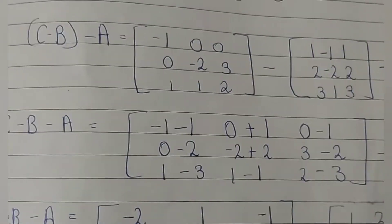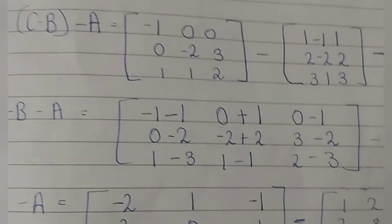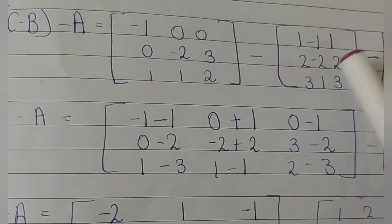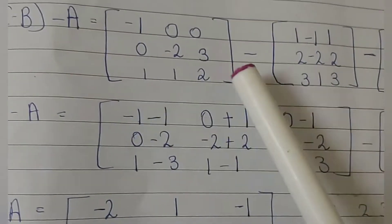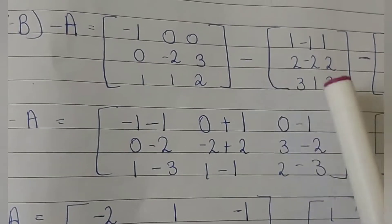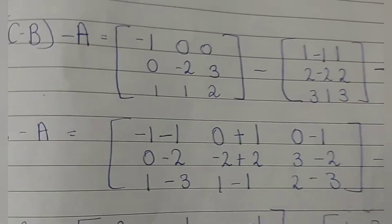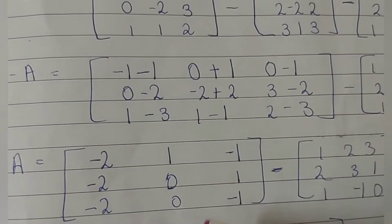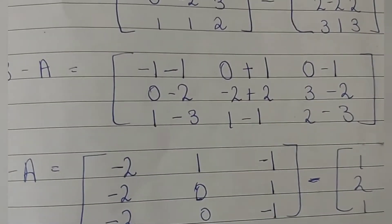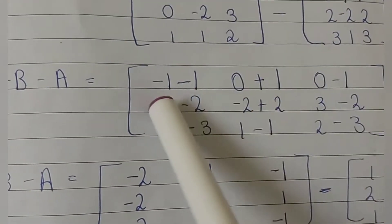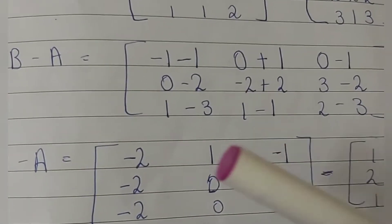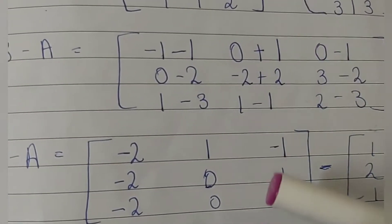Now solving the full left hand side expression (c minus b) minus a: we get minus 1 minus 1 equals minus 2, 0 minus 0 equals 0, minus 2 minus 2 equals minus 3, minus 2 plus 2 equals 3, minus 1 minus 2 equals minus 3, 1 minus 1 equals minus 2, and continuing to compute each matrix entry step by step.